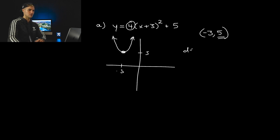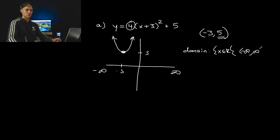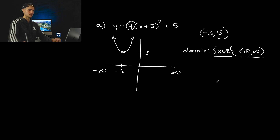So from here, the domain — as we know for a quadratic — is going to be x ∈ ℝ, from negative infinity to positive infinity. All of the x-values, because this extends infinitely, all the x-values between negative infinity and positive infinity are going to get hit at some point. So this is the set notation, and that is interval notation.